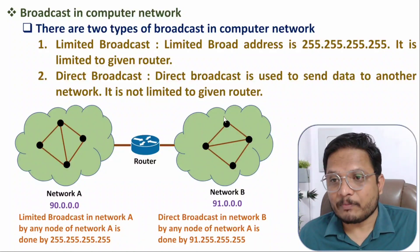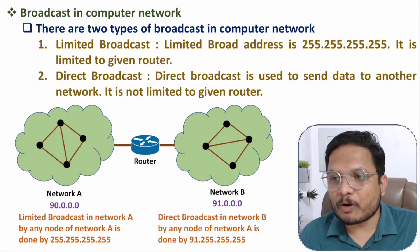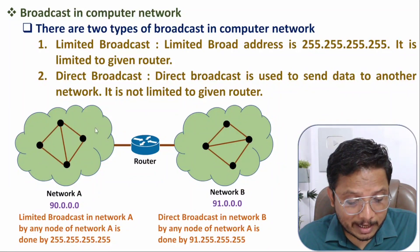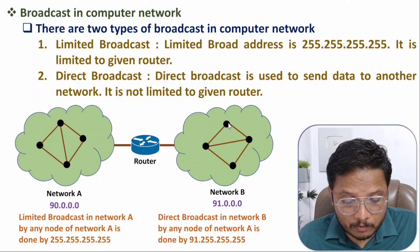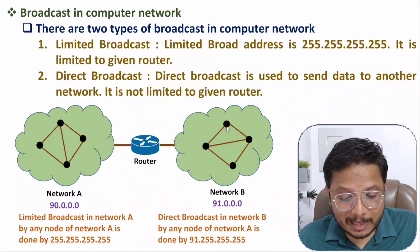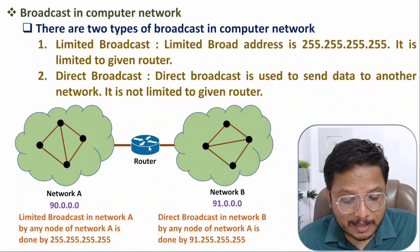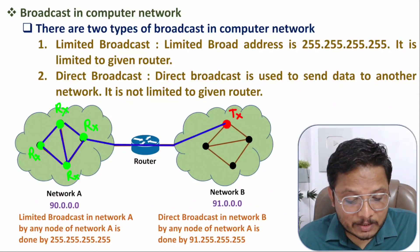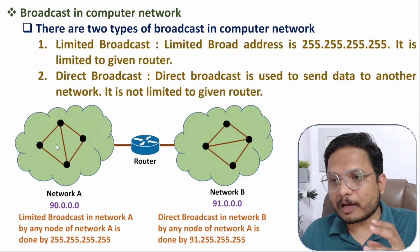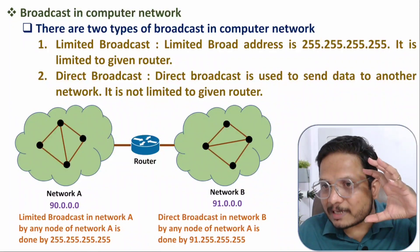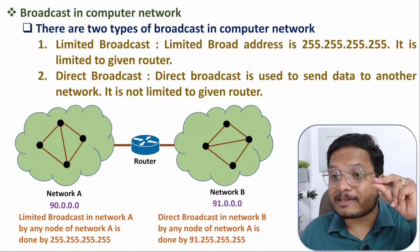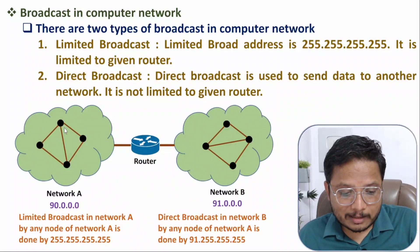So limited broadcast means a node is broadcasting a message inside its own given network, while direct broadcast means a node is broadcasting a message inside another network. For example, if one node in Network B wants to broadcast inside Network A, it will use IP 90.255.255.255, forwarded via the router, and the message will be broadcasted to all nodes inside Network A.